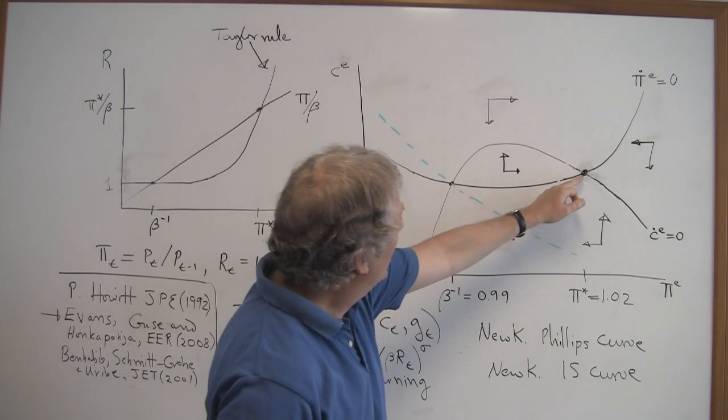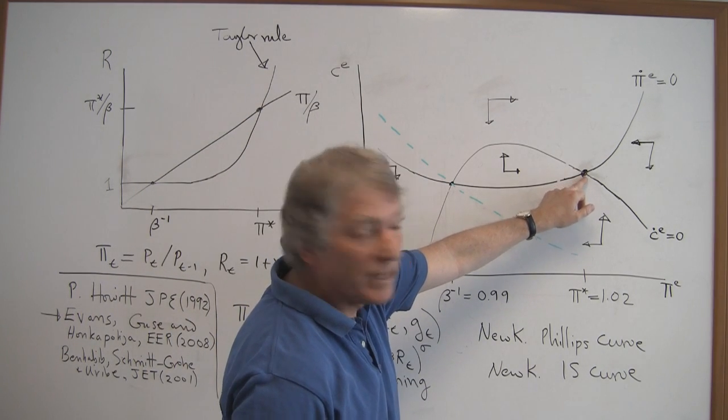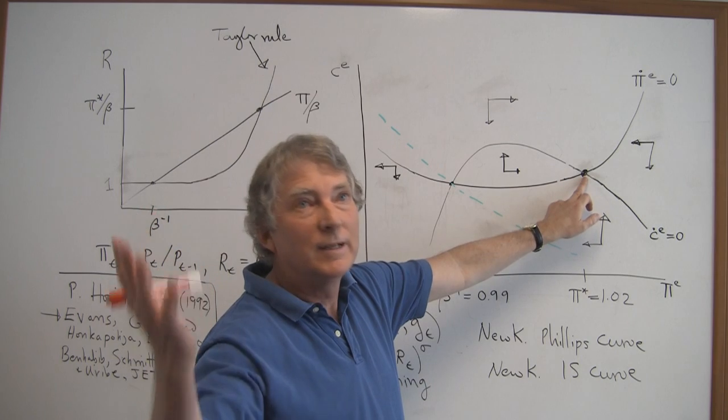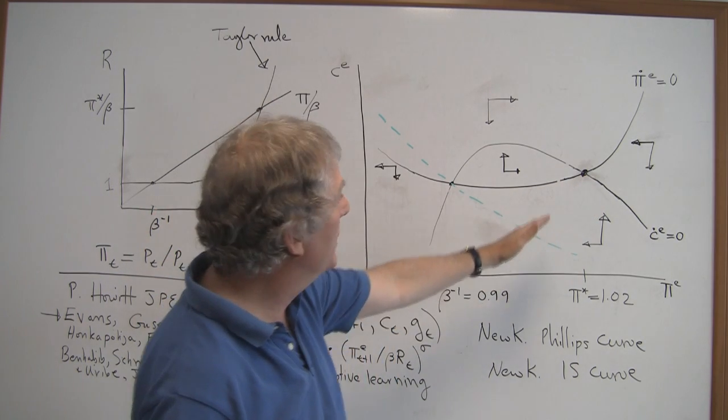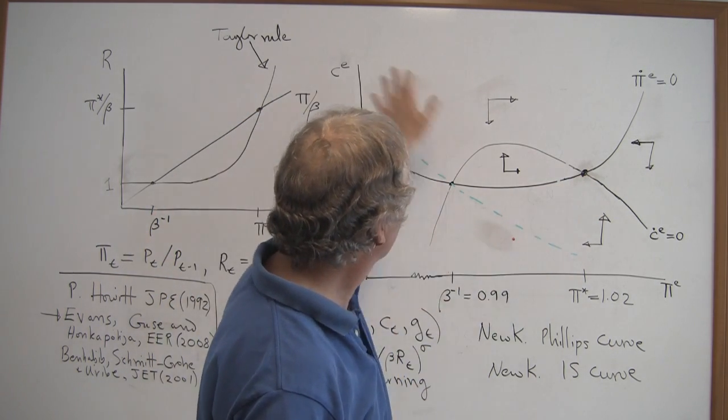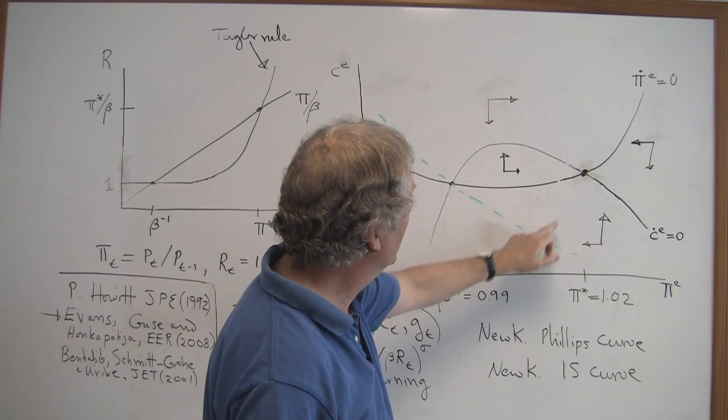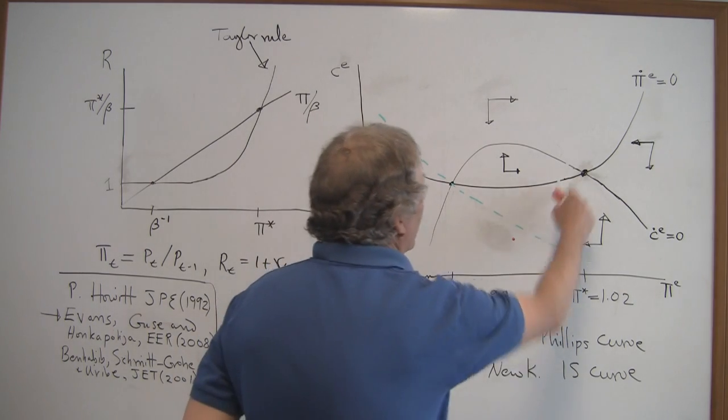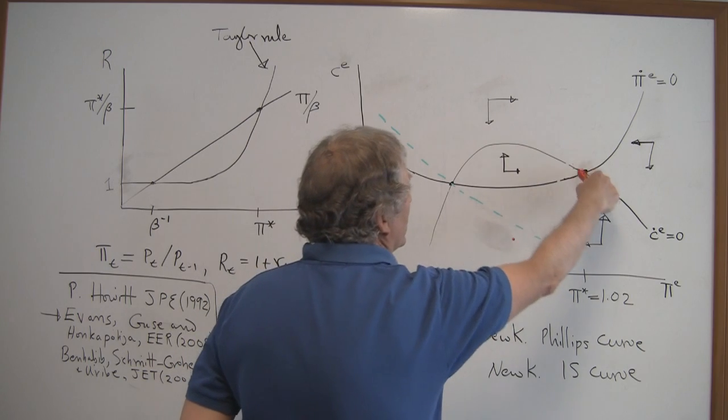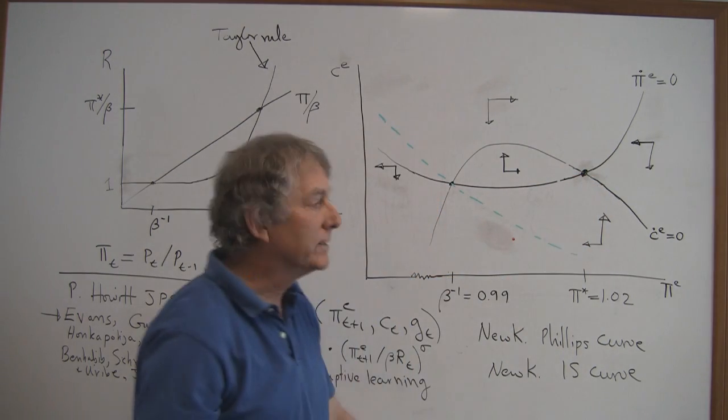But, what if you have a pessimistic shock to expectations? Suppose you have a financial meltdown. Everybody becomes pessimistic about their future consumption and about future expectations. Well, if the shock is not too large, the Taylor Rule still does the job, and you converge into the targeted steady state.